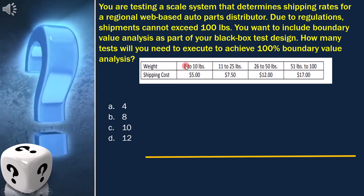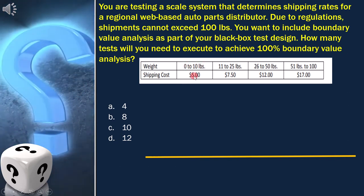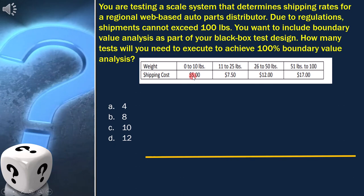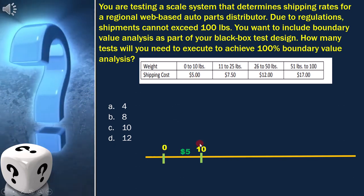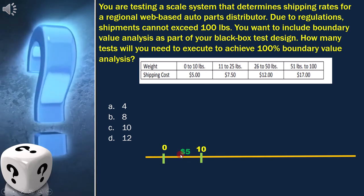As per the question, the first range is from 0 to 10. Corresponding shipping cost is $5. From this, we get 2 boundaries, 0 and 10, and $5 is the cost.